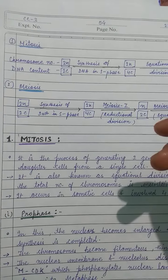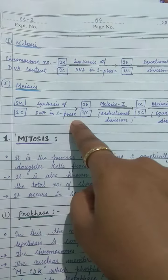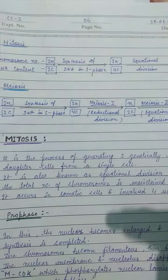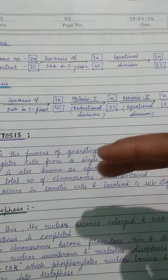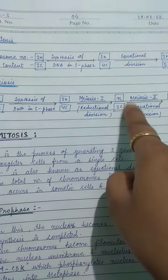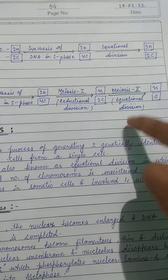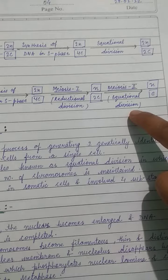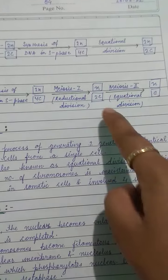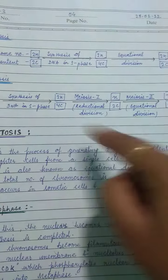In meiosis, meiosis-1 is the reductional division, where the chromosome number is halved and the DNA content goes from 4C to 2C. Meiosis-2 is the equational division, similar to mitosis, where the DNA content is halved but the chromosome number remains the same, resulting in N chromosomes and C DNA content.